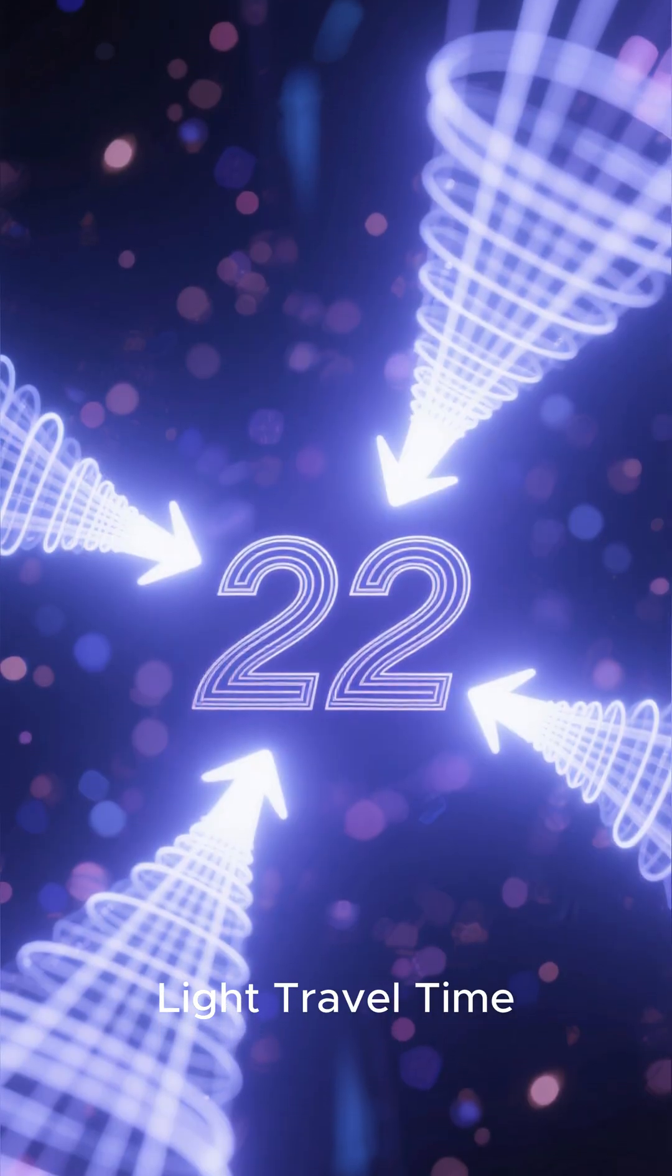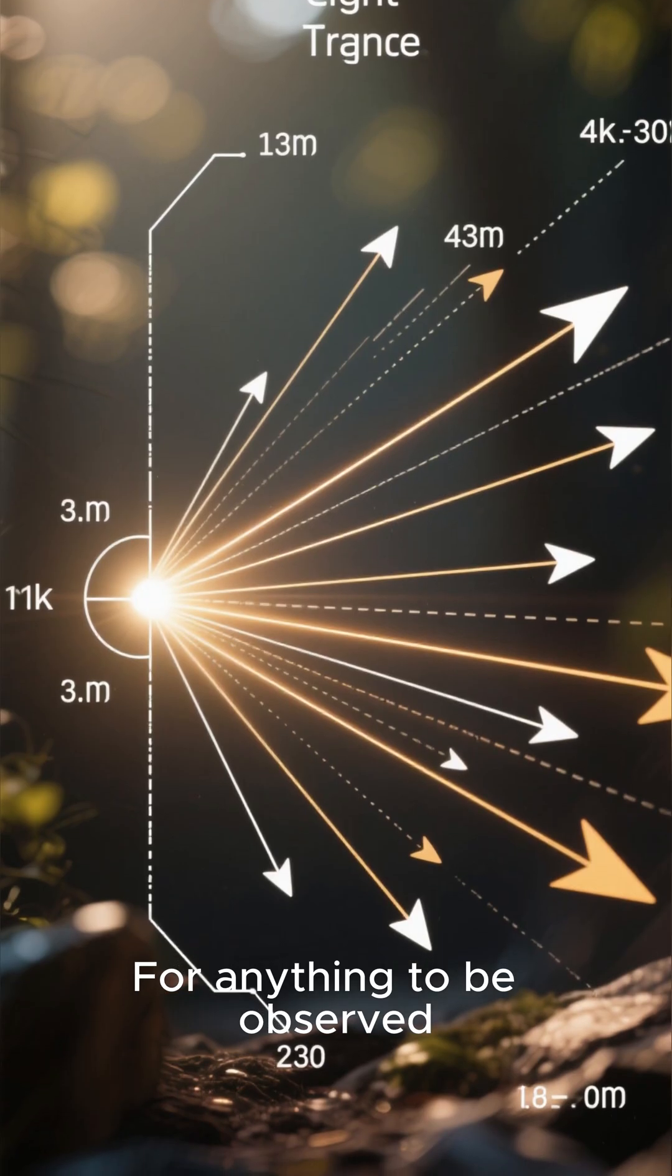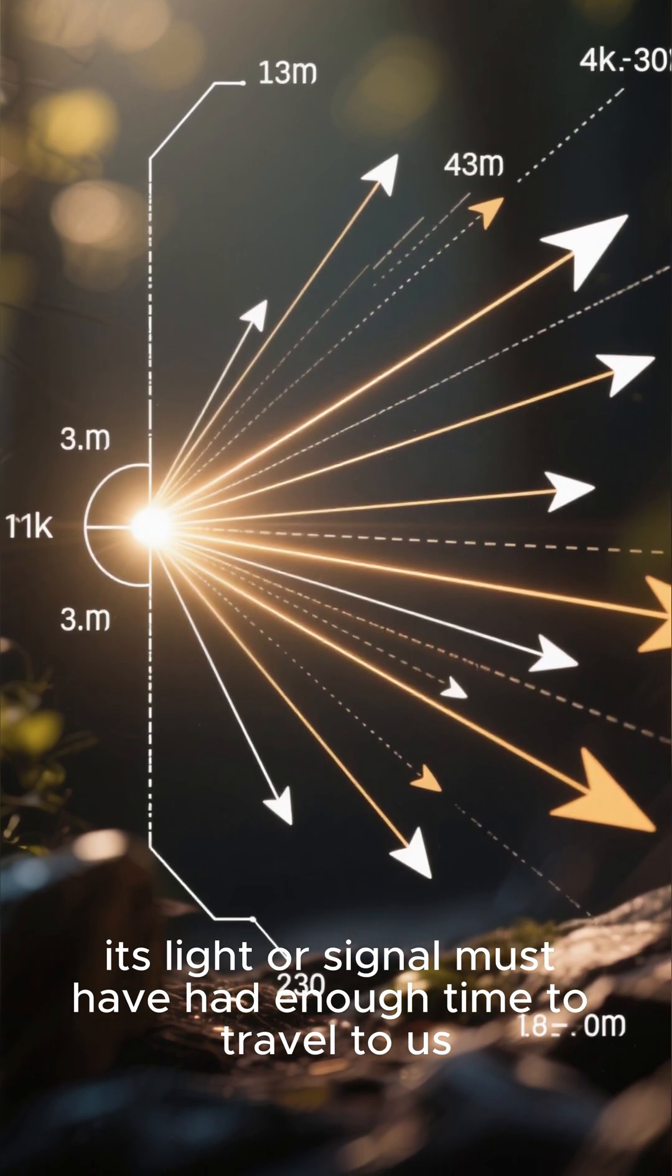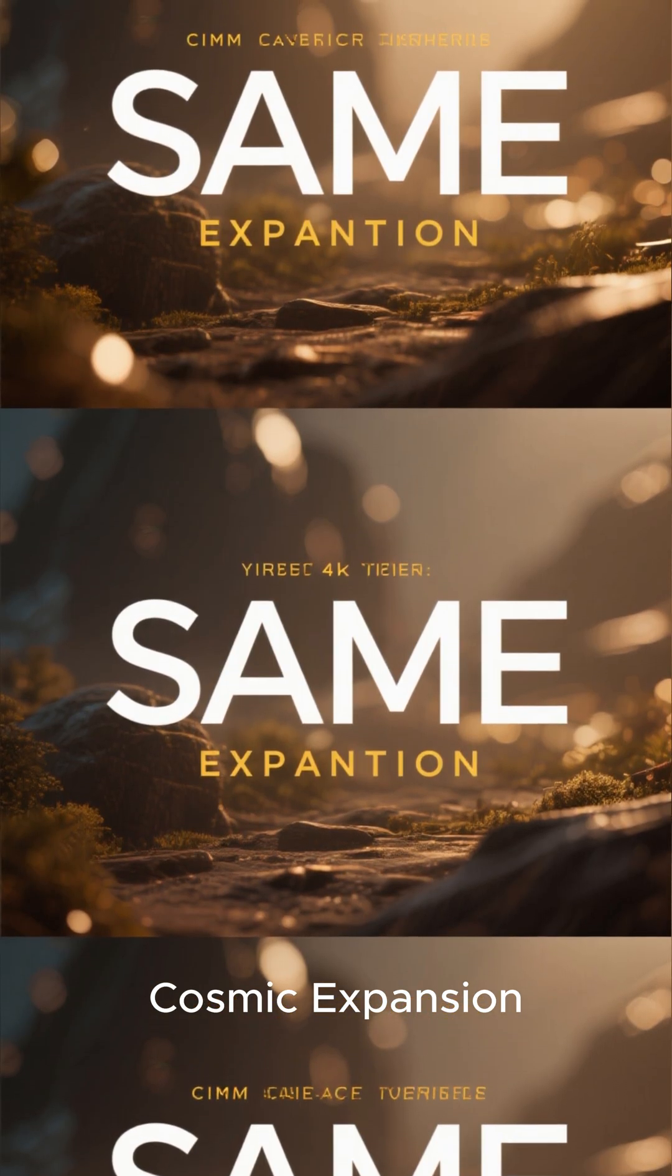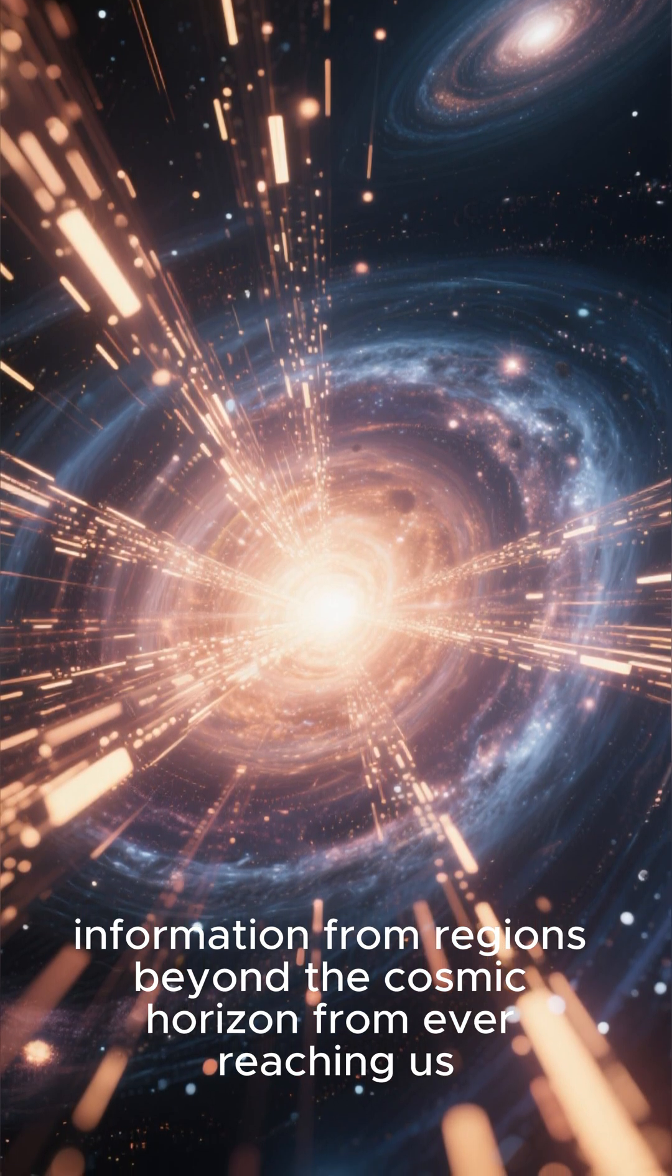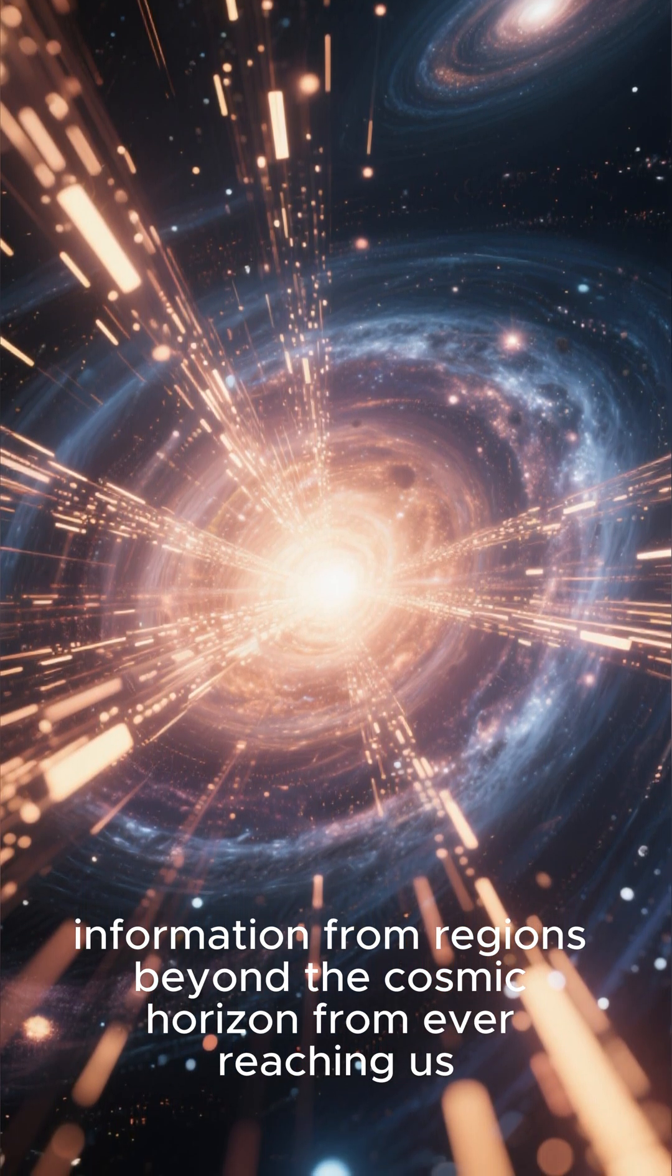Why we can't know for sure. For anything to be observed, its light or signal must have had enough time to travel to us. The accelerating expansion of the universe prevents information from regions beyond the cosmic horizon from ever reaching us.